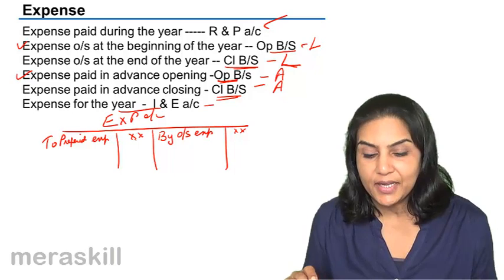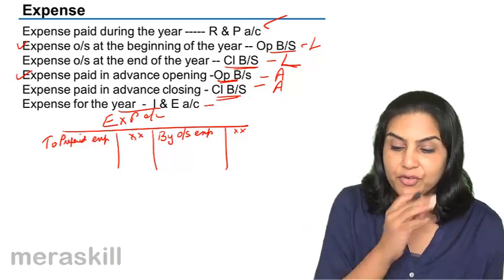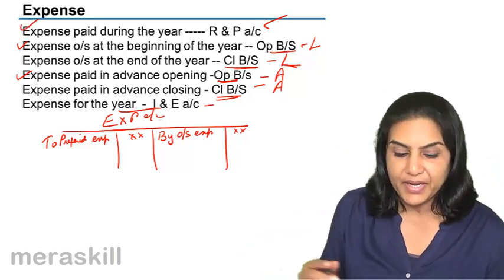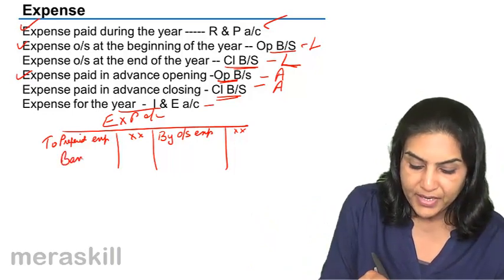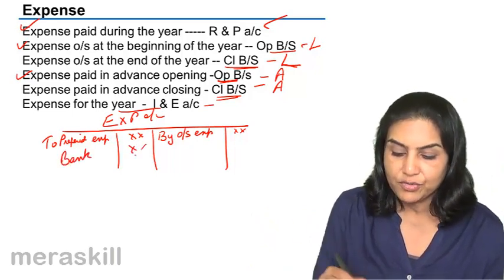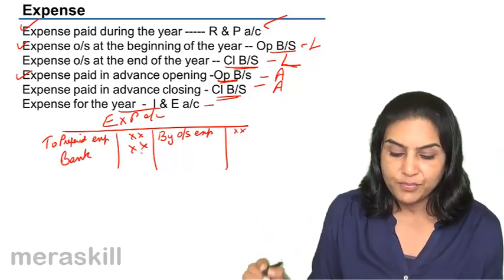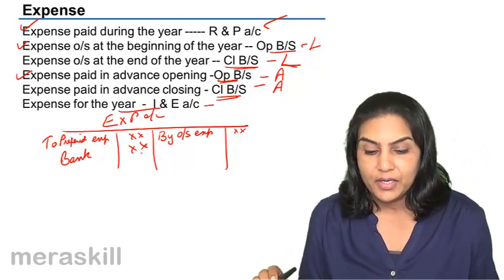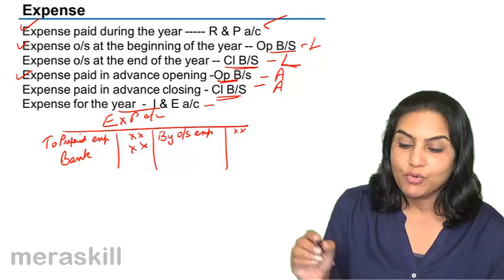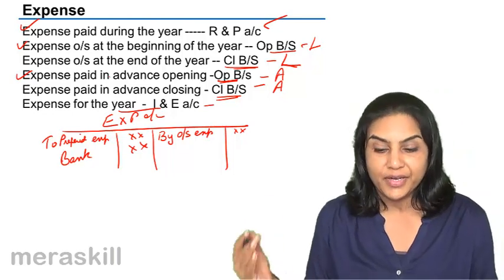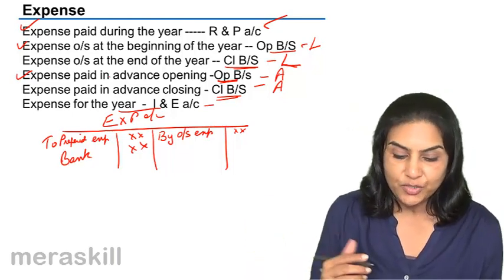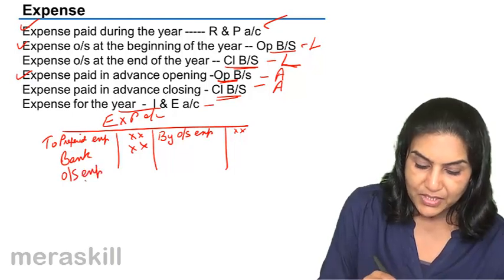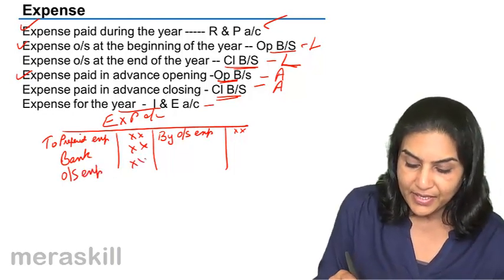Before expense outstanding at the end of the year, let us do the expense which is paid during the year. Expense account debit to bank — bank is credited since money has gone out. Next, expense outstanding at the end of the year: it is an expense, so expense should be increased. Expense account debit to outstanding expense — we are creating this liability here.